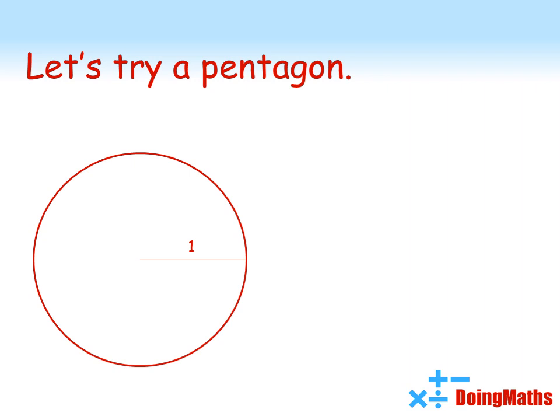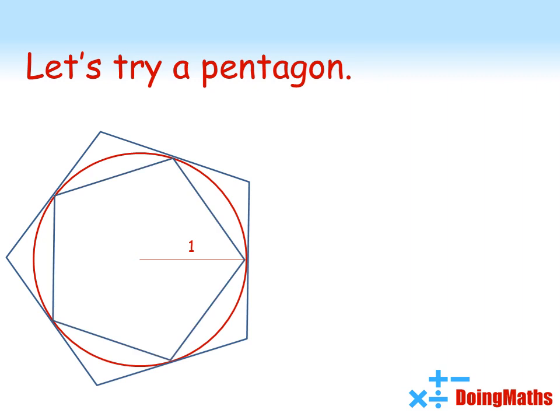So again, we're going to have a large pentagon on the outside and a small pentagon on the inside. If we can work out the areas of these, we'll hopefully get a more accurate number for the area of our circle. Now pentagons are a little bit trickier to work out the area of, so let's have a look at these separately.